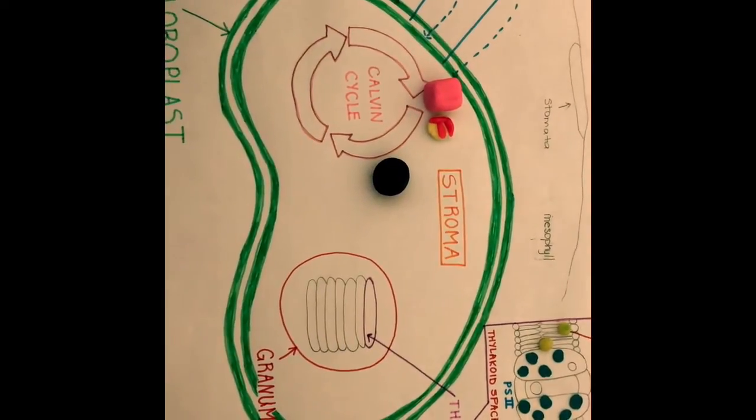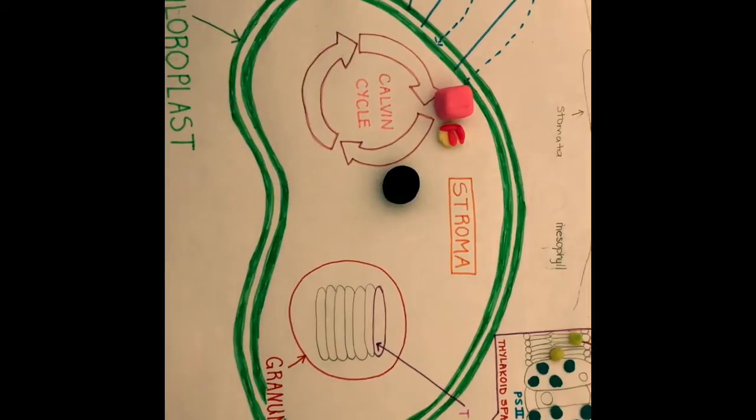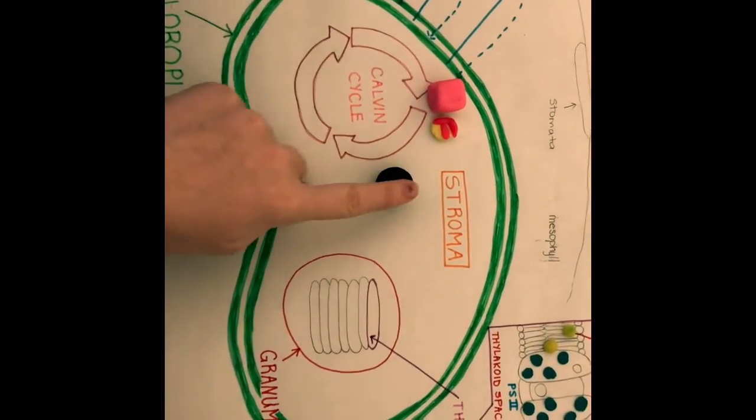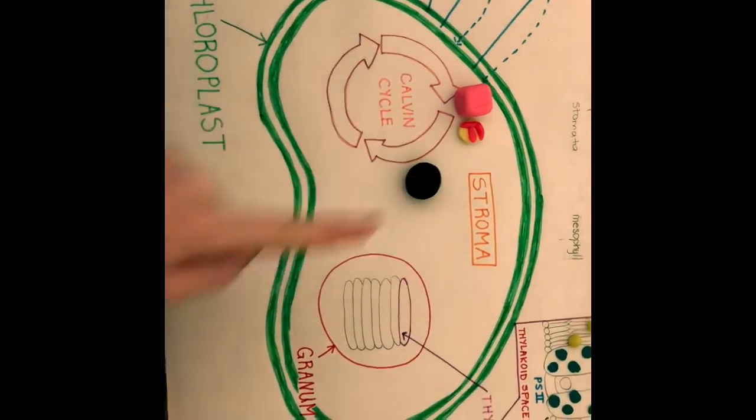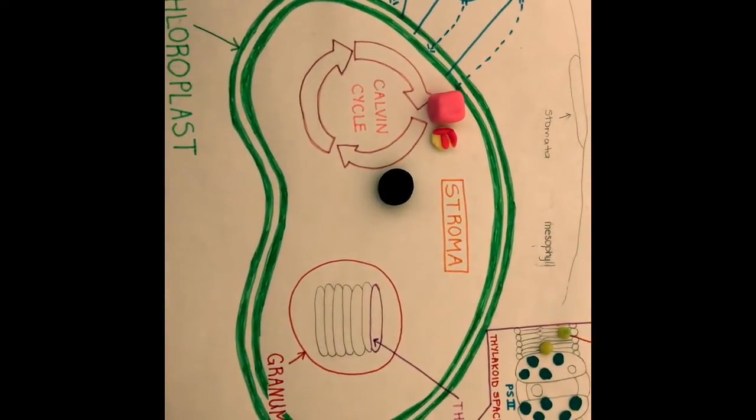In the first stage of the Calvin cycle, also known as fixation, light-independent reactions are initiated, and CO2 is fixed from inorganic to an organic molecule.